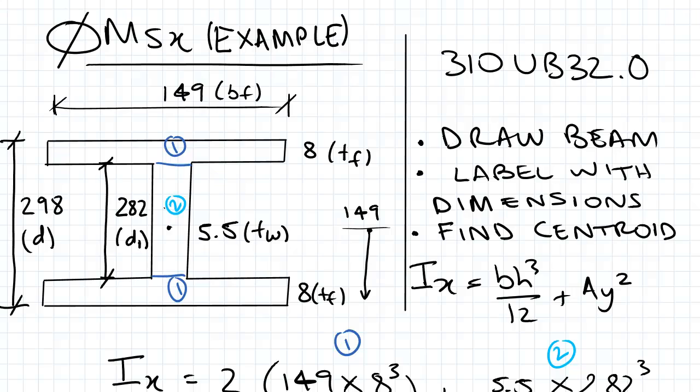So what we have here is the width of the flange, the thickness of the flange, the thickness of the web, and then the depth. And then also the most important feature is the centroid, so finding the centroid of this by dividing the depth by 2 to get 149 and that distance to the bottom of this flange.